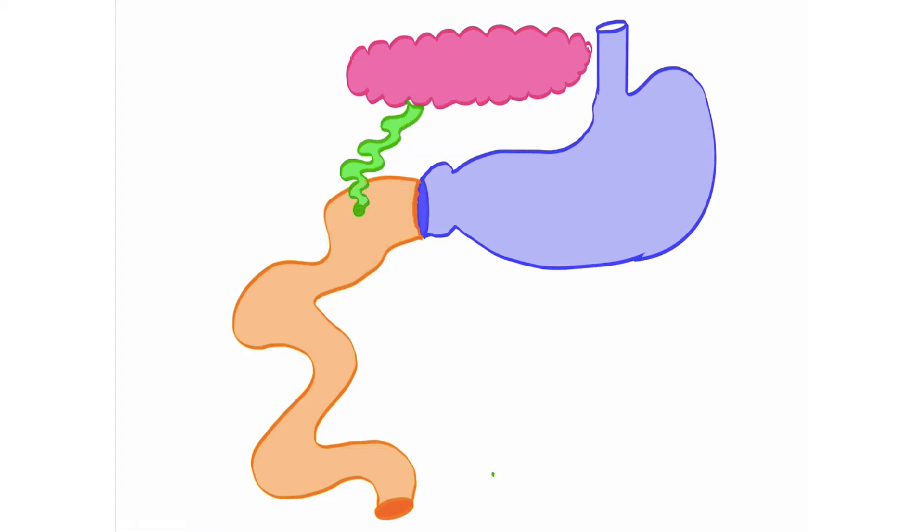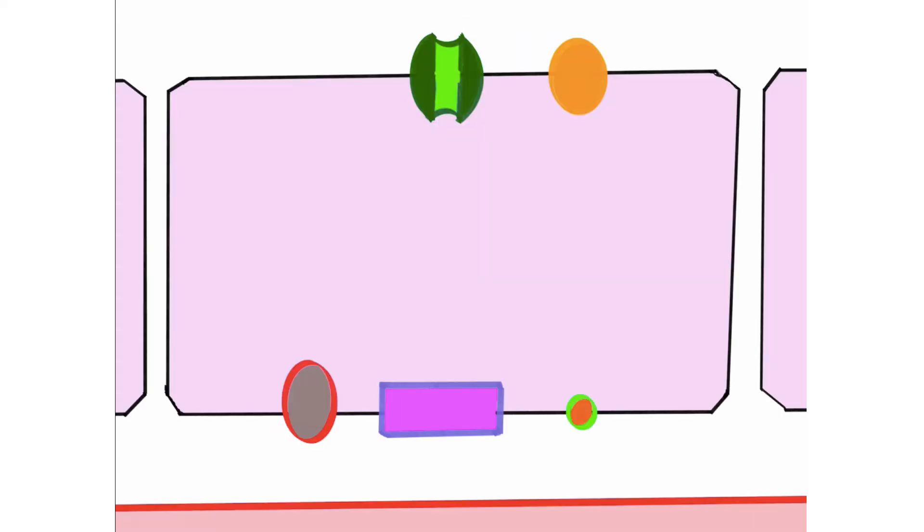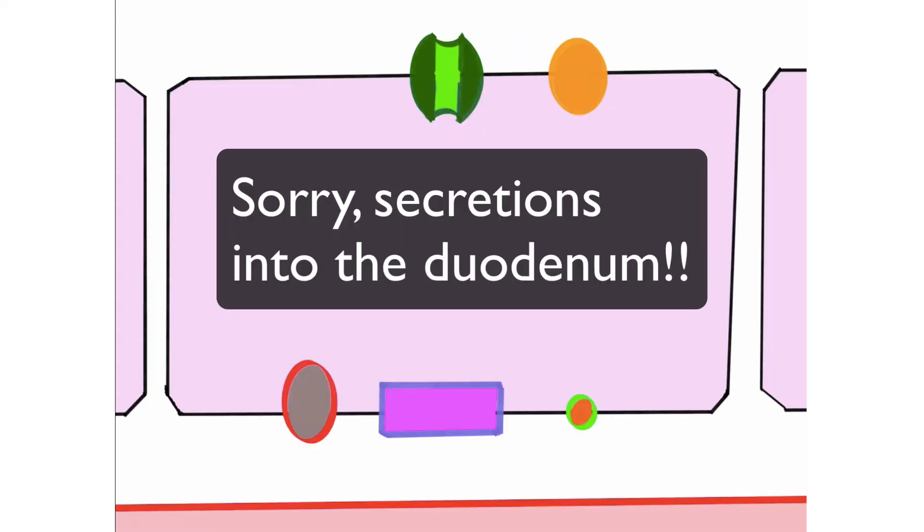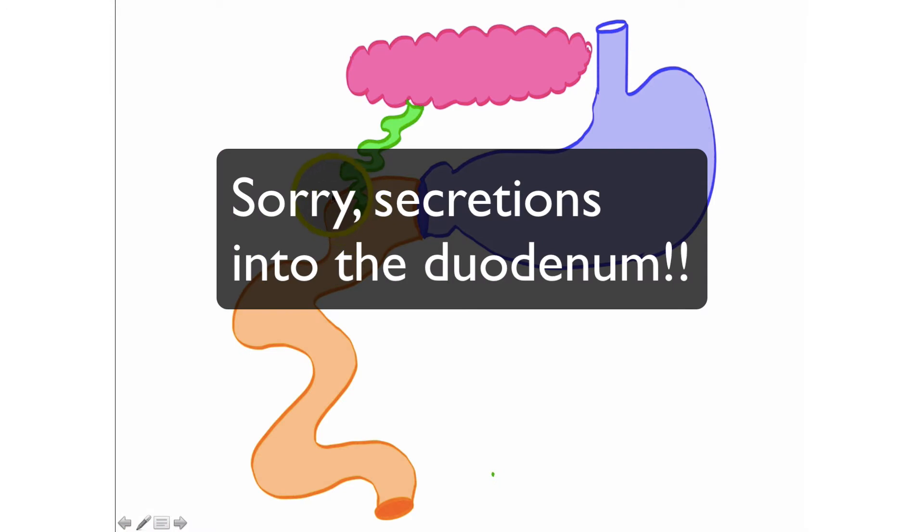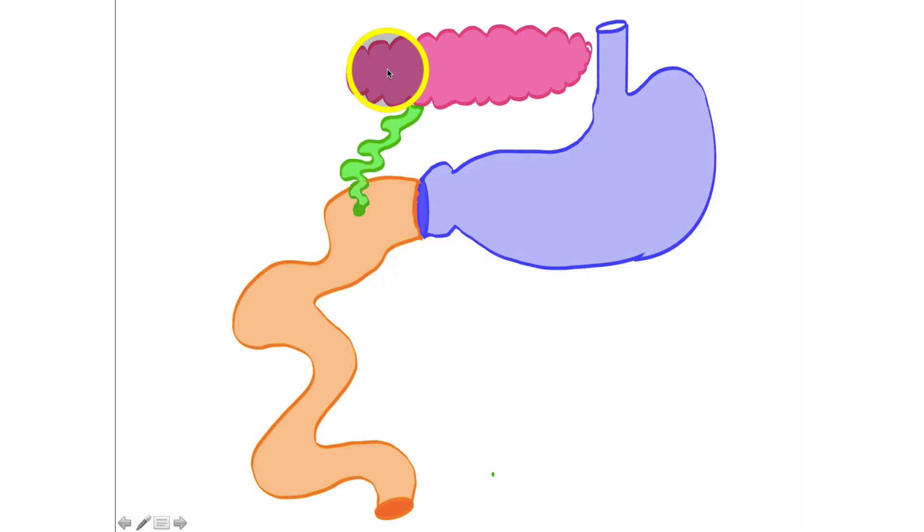So in this presentation right here, I'm going to talk about secretions into the pancreas. And these cells right here could pertain to duodenal cells, so cells lining the duodenum, or they could pertain to exocrine cells of the pancreas. They're both going to achieve the same outcomes.